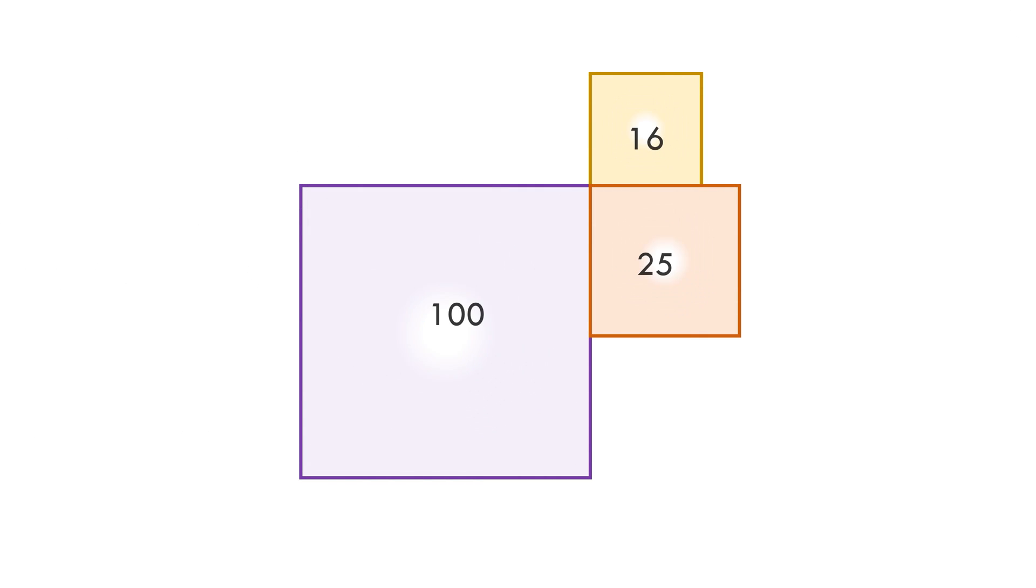We have three squares of areas 100 square units, 25 square units, and 16 square units placed together as shown. If a circle passes through the given points like shown, find the area of the circle.